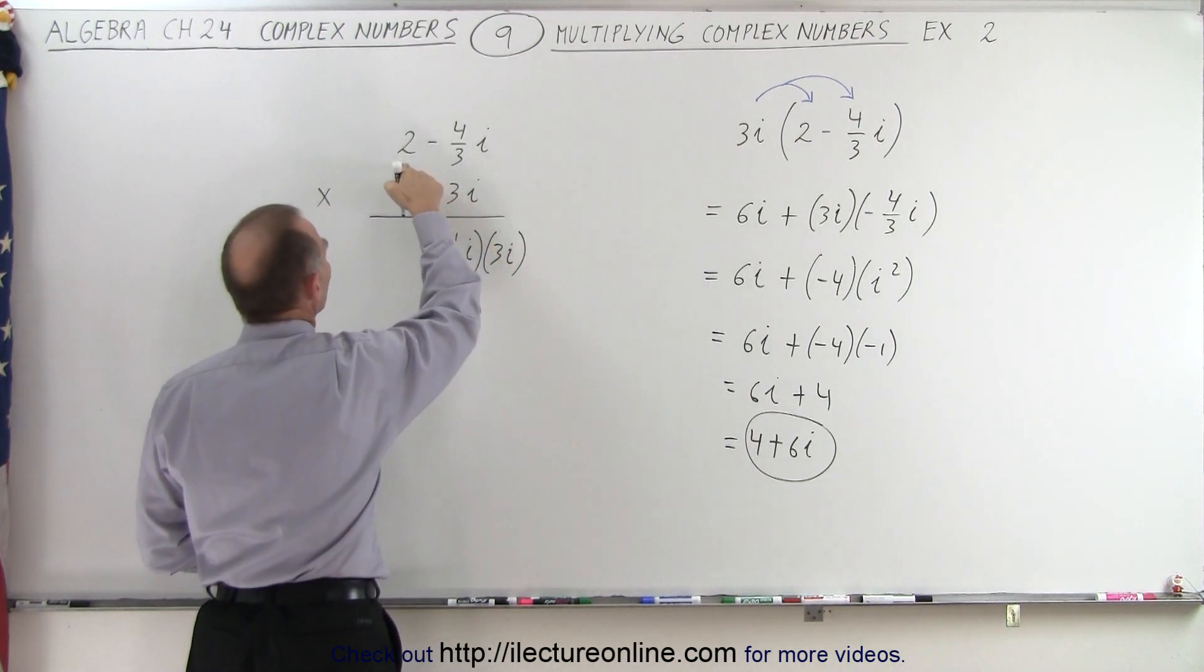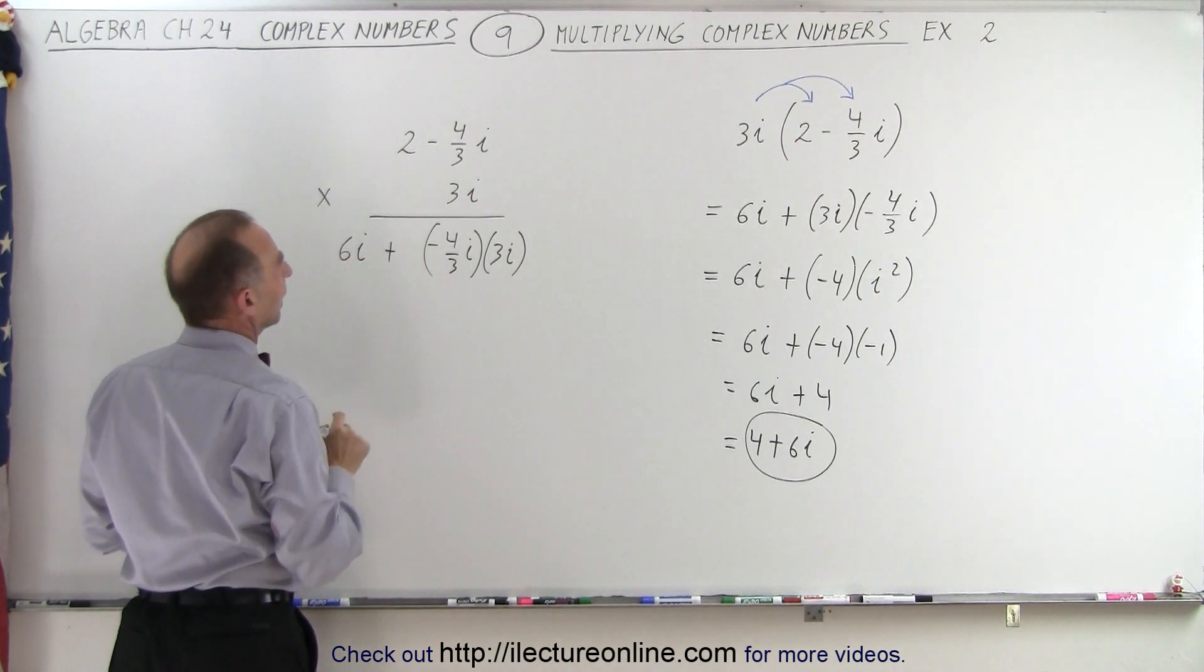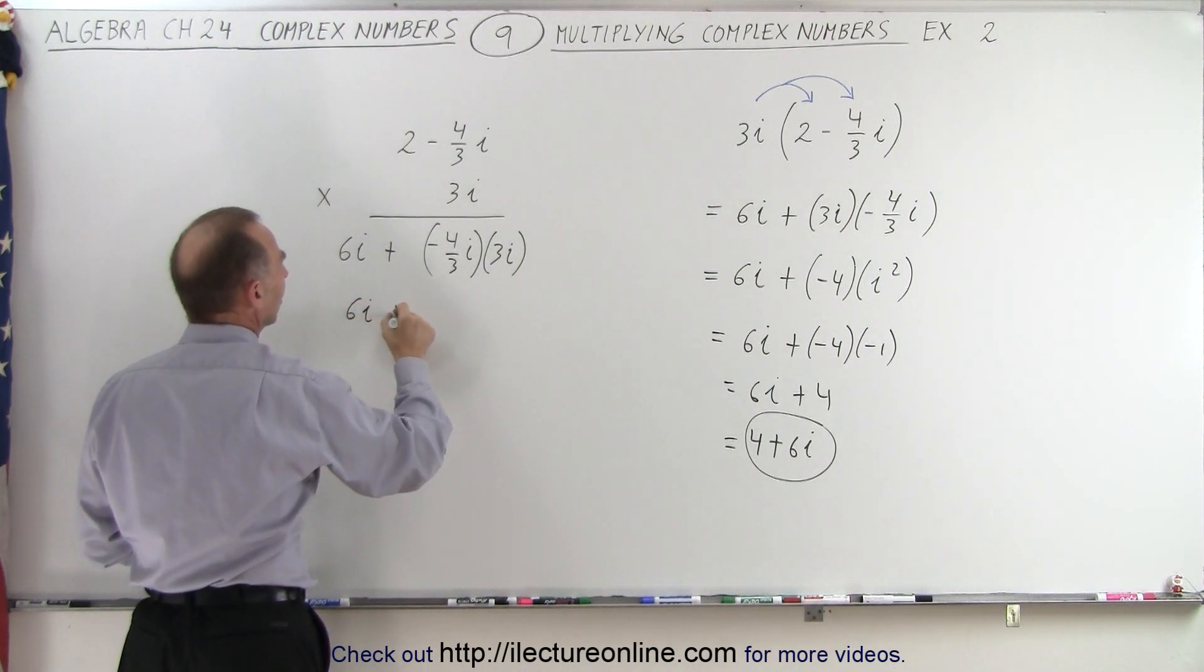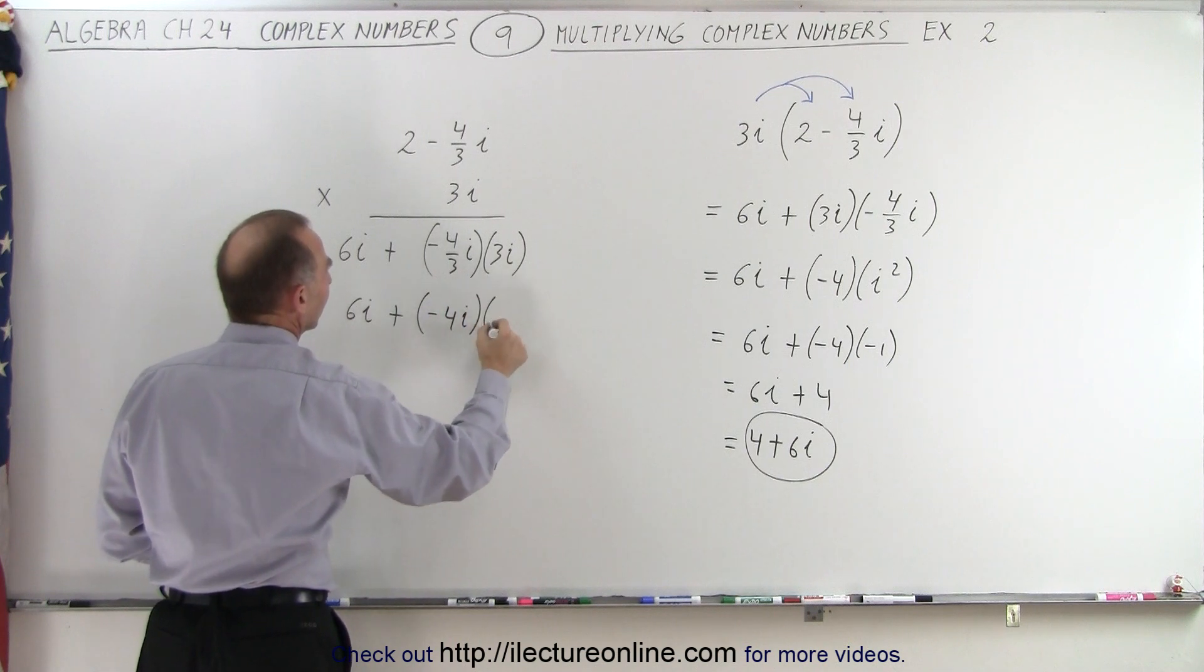And then here we have 3i times 2, that gives us 6i. And then here we can simplify that by saying the 3s cancel, so we get 6i plus, the 3s cancel, it gives us negative 4i times i.